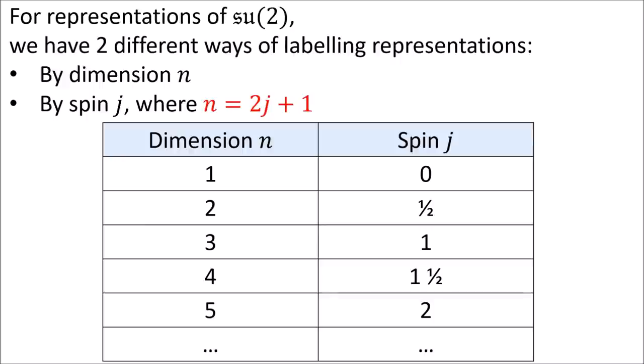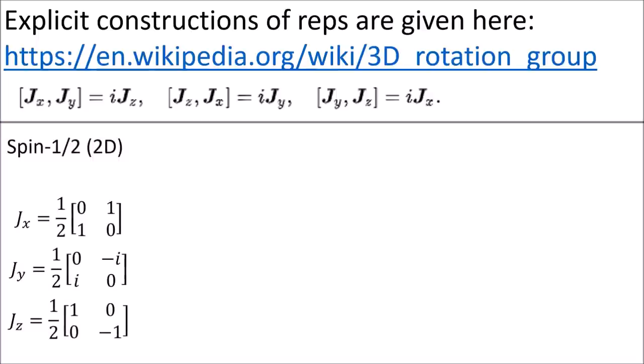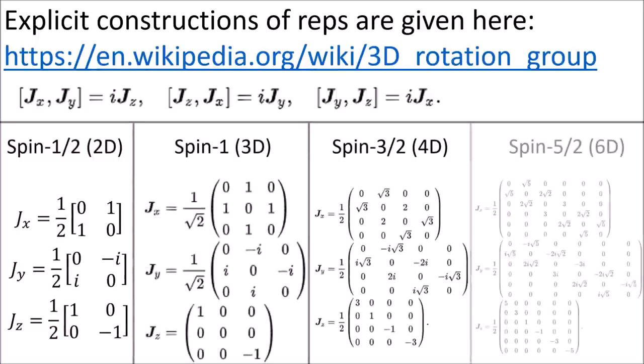We can label the representations either by dimension or by spin. If the representation has spin j then the dimension of that representation is 2 times j plus 1. And this is just copy pasted from Wikipedia but these are the Lie algebra representations for the spin-1/2, spin-1, spin-3/2, and spin-5/2.